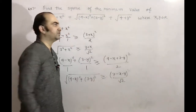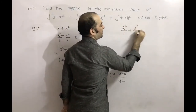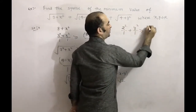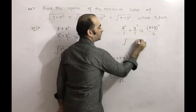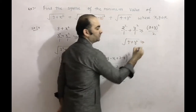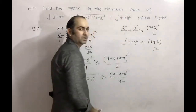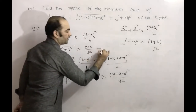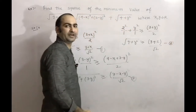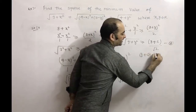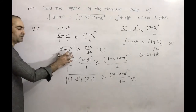For the third term √(4+y²), we write it as 2²+y². Applying T2's inequality: (4+y²)(1+1) ≥ (2+y)². Taking the square root, √(4+y²) ≥ (y+2)/√2.